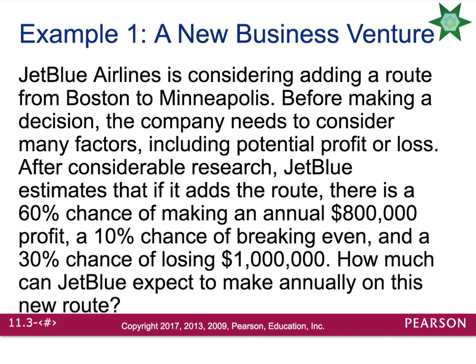For an example: JetBlue Airlines is considering adding a route from Boston to Minneapolis. Before making a decision, the company needs to consider many factors, including potential profit or loss. After considerable research, JetBlue estimates that if it adds the route, there is a 60% chance of making an annual $800,000 profit, a 10% chance of breaking even — which means no profit, no loss — and a 30% chance of losing $1 million. How much can JetBlue expect to make annually on this new route?